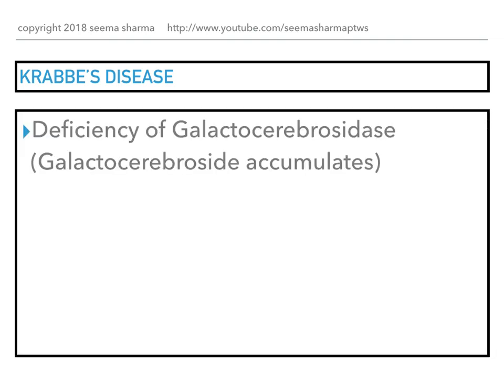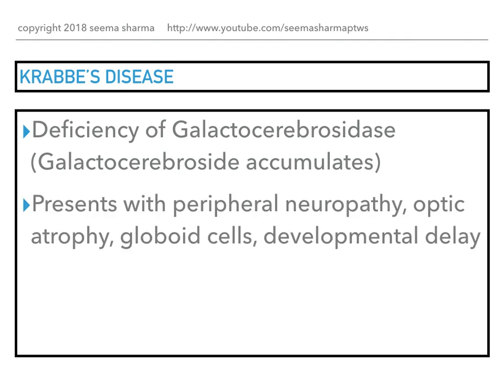Krabbe's disease is caused by deficiency of galactocerebrosidase, and galactocerebroside accumulates. The clinical presentation is peripheral neuropathy, optic atrophy, globoid cells, and developmental delay.